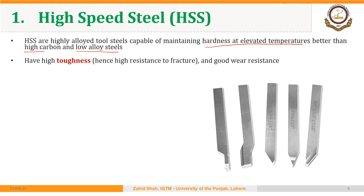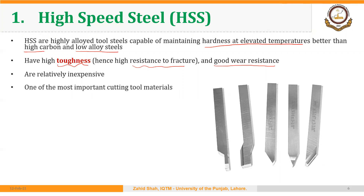HSS has high toughness, and as a result it also has high resistance to fracture and good wear resistance. However, among the cutting tool materials we will discuss today — carbides, ceramics, and CBN — HSS as a family has the lowest hardness. HSS tools are relatively inexpensive and are very frequently used because of their low cost and other favorable properties.